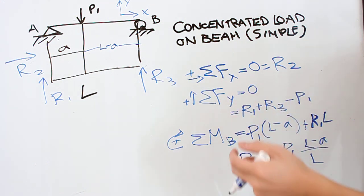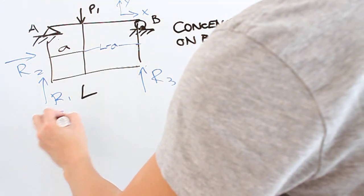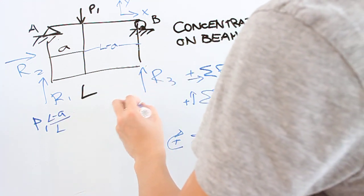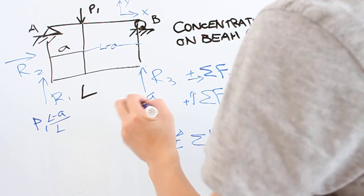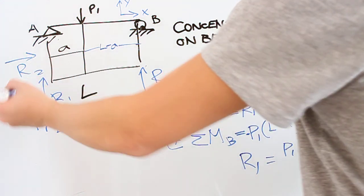Now, we plug it back into here. If you do, you'll get R3 equals P1 times a over L. And we can see that R2 is zero.